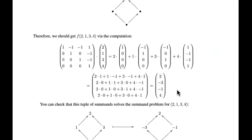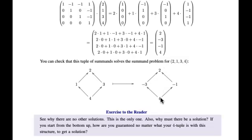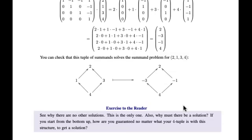This solves the system, and you can check it: negative 3 plus 4 ends up being 1; up to this point we just have 4; up to this point negative 1 plus 4 is 3; and 2 plus negative 3 plus negative 1 plus 4 is 2. So this solves the summand problem from cumulative sums to summands, and we did it using a Möbius matrix.